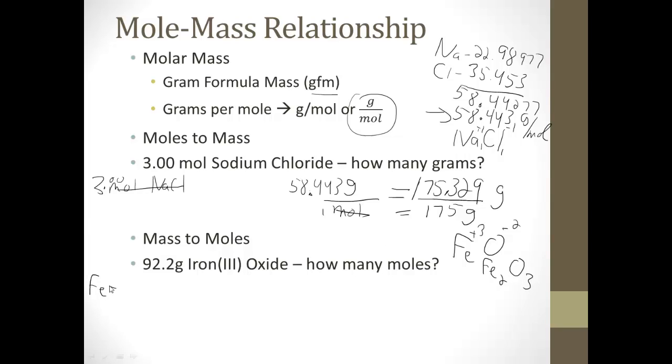Alright, so iron has a mass, if you look on the reference table, of 55.845, but we need 2 of them. So times 2, and that's going to give us 111.69, 111.69. Alright, oxygen is 15.9994 times 3, and that's going to give us 47.9982. Alright, now we just add these up, and we get 159.69 grams per mole. And that's after we took into account that we're allowed 2 significant figures.